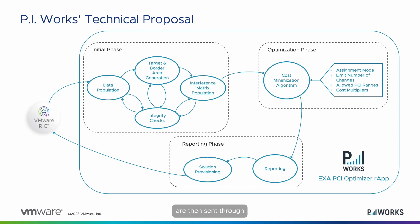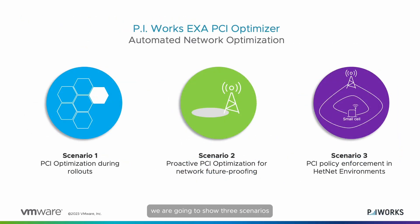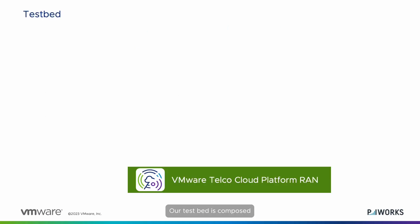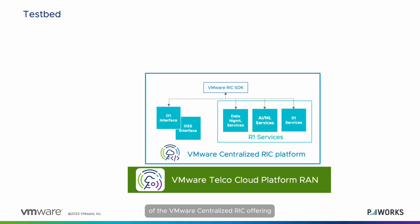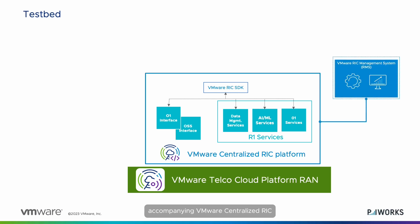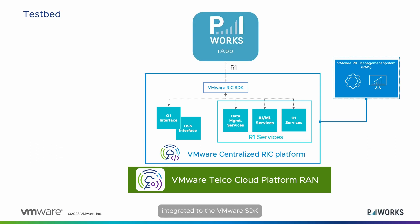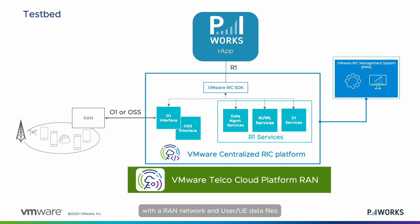These recommended changes are then sent through VMware Centralized RIC for implementation. In this demo, we are going to show three scenarios based on different PCI optimization features of the R-App. Our testbed is composed of the VMware Centralized RIC, offering O1 OSS, data management, and AIML services to PI Works applications, accompanied by VMware RIC Management System, or RMS, offering a dashboard to monitor and control the application. Integrated through the VMware SDK, we have PI Works ExaPCI Optimizer R-App, and the testbed is completed with a RAN network and user UE data files.